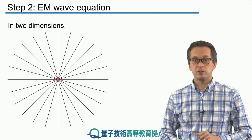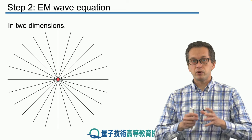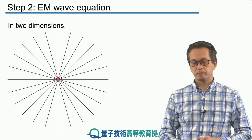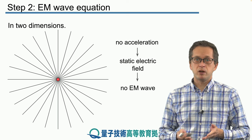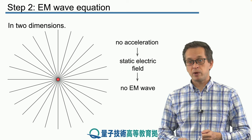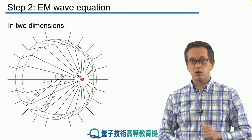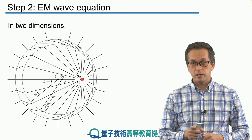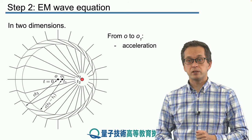In two dimensions, we have a point charge sitting in the middle with field lines emanating out of or towards it, depending on the sign of the charge. If we let the charge sit there without moving or acceleration, we have only a static electric field — no electromagnetic wave. So we accelerate the charge in the horizontal direction from position 0,0 to 0.01, taking time from t0 to t1, and then let the charge travel at constant speed.